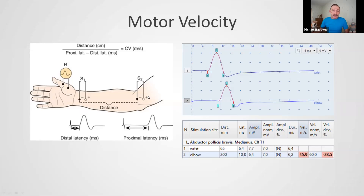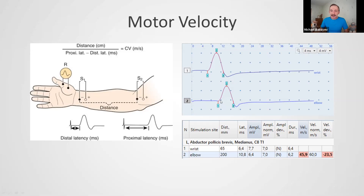If we place the electrical stimulator at a second site on the same nerve — for example at the wrist — and apply an electrical stimulus, we get another response of the same shape, but appearing later than the first. This is because the signal must travel the additional distance between the two stimulation sites. We can measure this distance with a ruler and calculate the difference in latencies, which gives us time. Dividing distance by time gives us velocity.